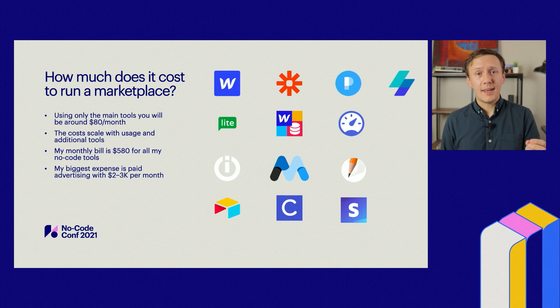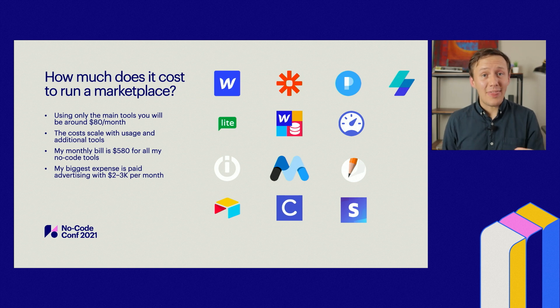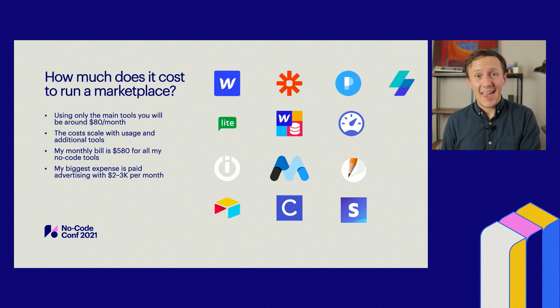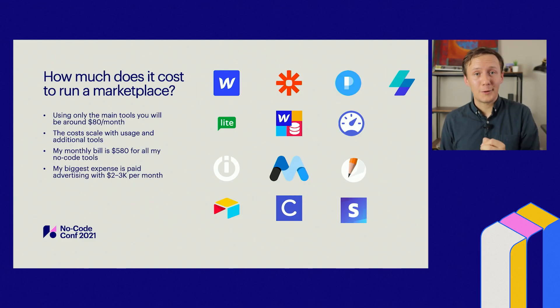When you're getting started, you're likely going to have a cost of $50 to $80 per month to run your platform — that is how much I paid for the first six months of running the Unicorn Factory. As your platform grows and you add new tools, the costs increase. At the moment I'm paying $580 a month to run the Unicorn Factory in New Zealand and Canada, which is still incredibly low compared to hiring developers to build the equivalent site in code. The only other cost is my monthly advertising expense of $2,000 to $3,000.